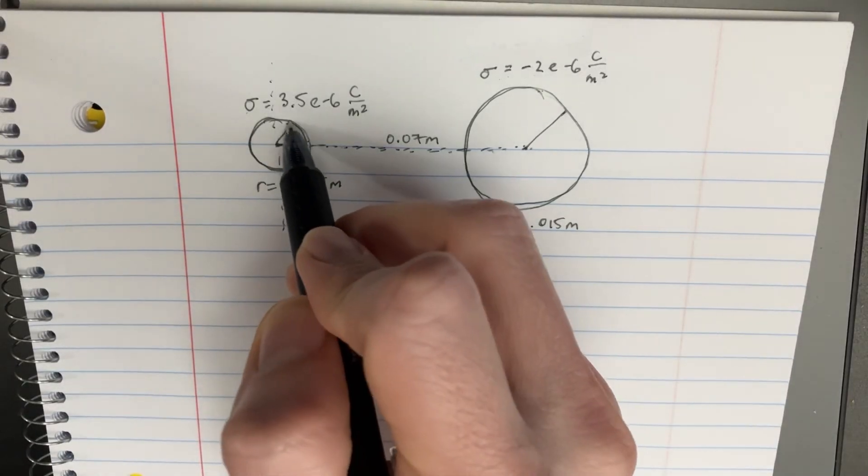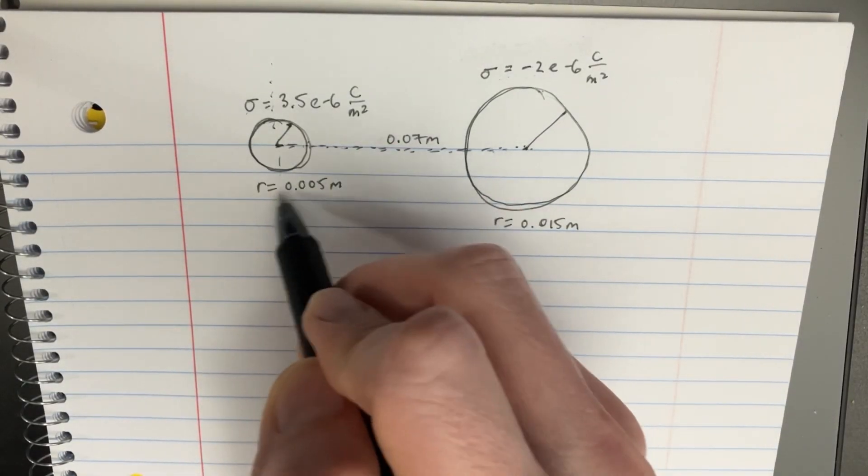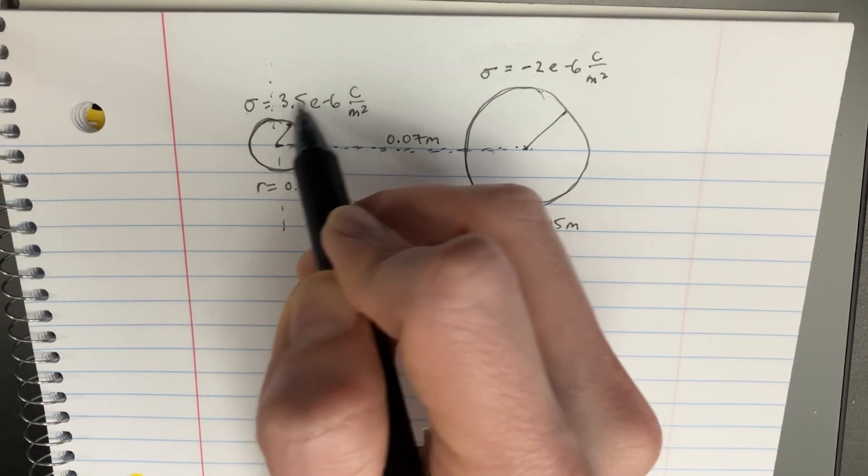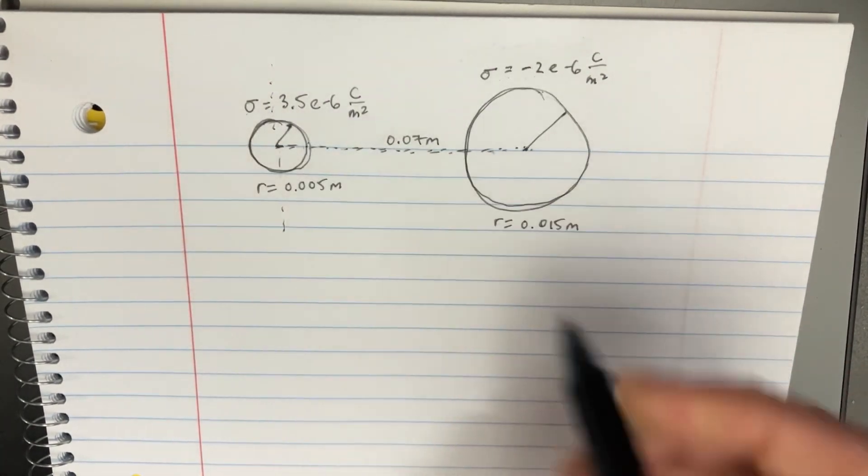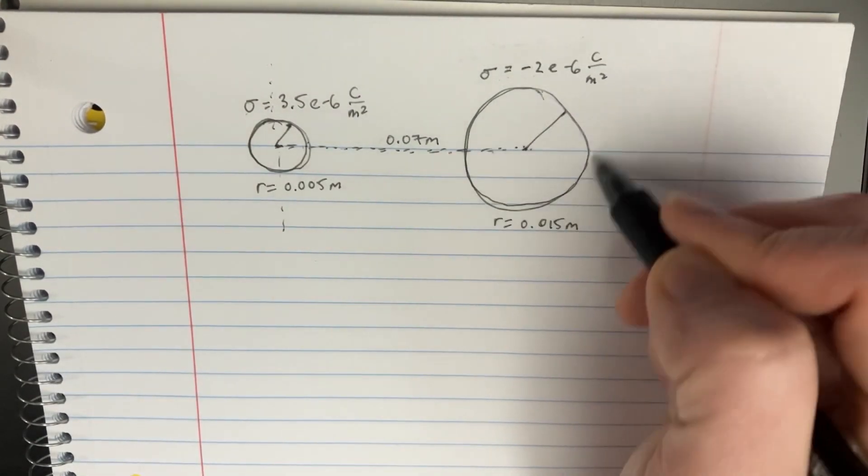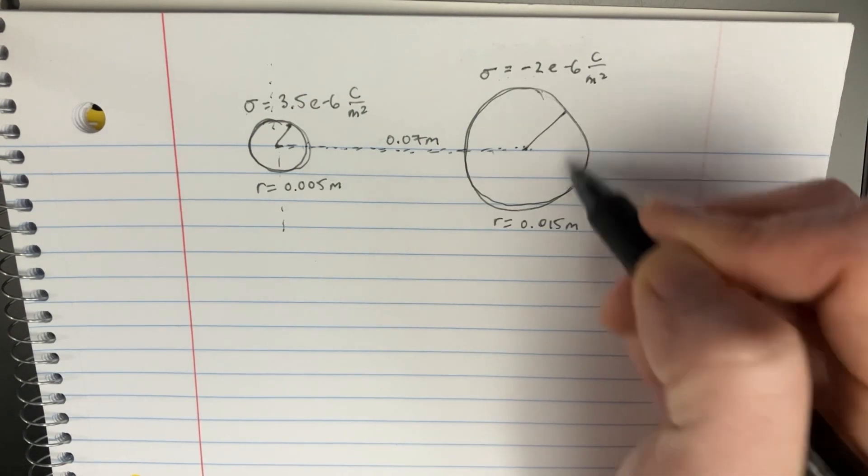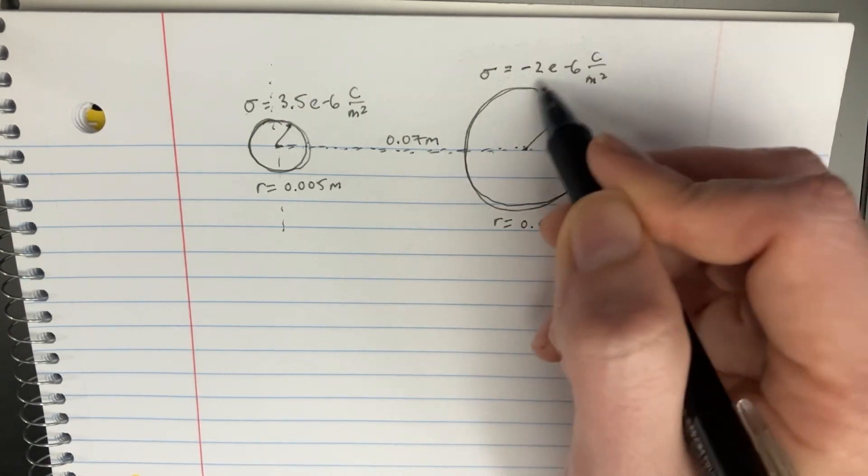In this example, we're given two shells. We got the smaller shell here, this little radius, with a positive density over here. And then over here, this bigger shell with the bigger radius has a negative density.